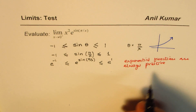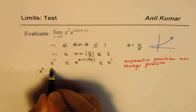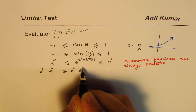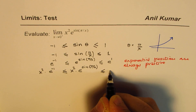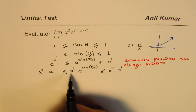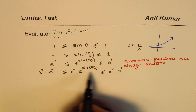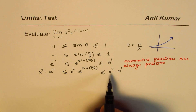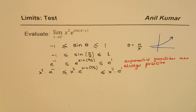Now, we can multiply by x squared. We can say x squared times e to the power of minus 1, x squared times e to the power of sine pi by x, and x squared times e to the power of 1. So x squared times e to the power of sine pi by x should be between x squared times e to the power of minus 1 and x squared times e to the power of 1. It's between these two values.